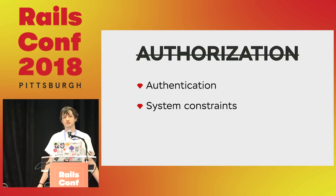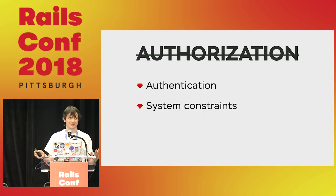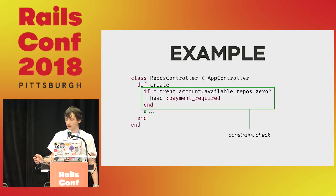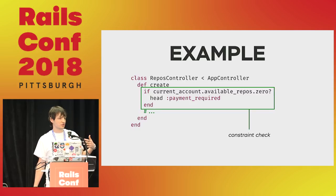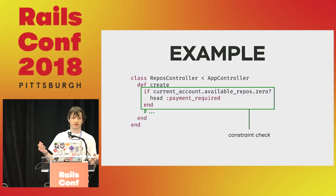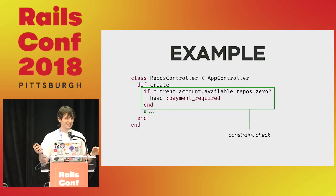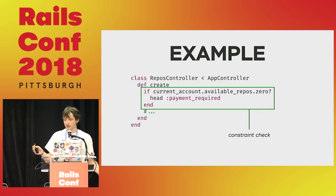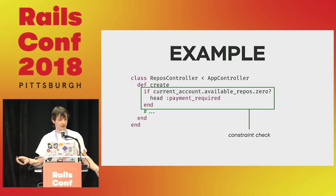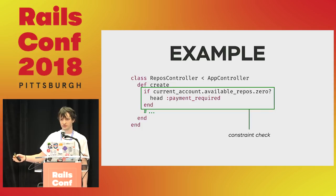There are other types of things that could be confused with authorization. I call them system constraints. It's a little bit tricky. What's a system constraint? It's something like an environmental condition. It doesn't relate to a particular subject, a particular user, or a particular resource. It usually deals with account limits in SaaS applications and some kind of subscriptions. It differs in the type of response code you show to your user. That's not authorization — it's something that goes after authorization. You're still allowed to do this kind of thing, but there are some restrictions that don't depend on you.